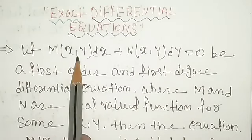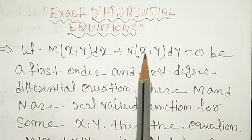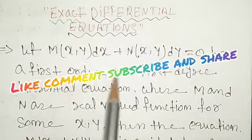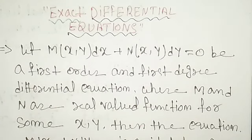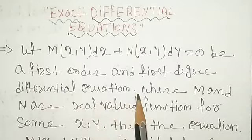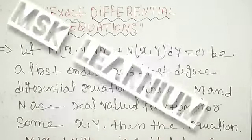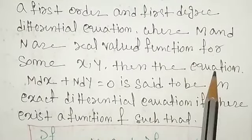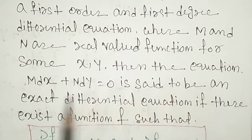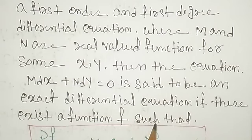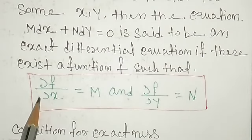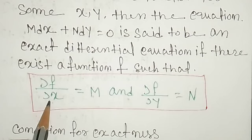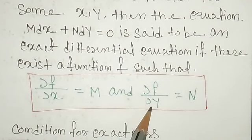Here we have: let M(x,y) dx plus N(x,y) dy equal to 0 be a first order and first degree differential equation, which is in the form of M dx — like (x + y)dx or cos(x) plus cos(y) dy equal to 0 — which is obviously first order and first degree. M and N are real valued functions of x and y. The equation M dx plus N dy is said to be an exact differential equation if there exists a function f such that ∂f/∂x = M and ∂f/∂y = N.